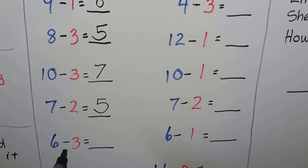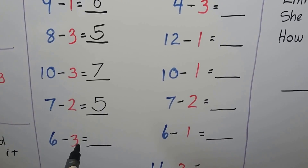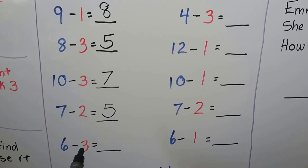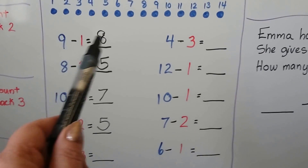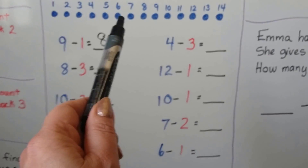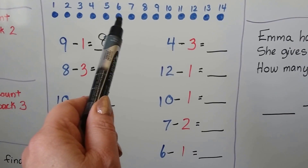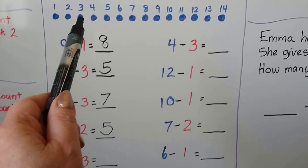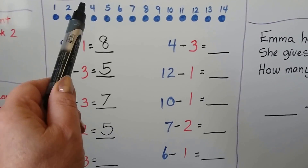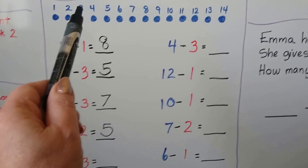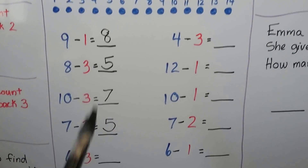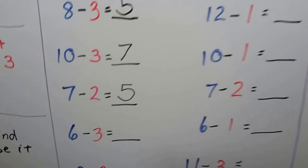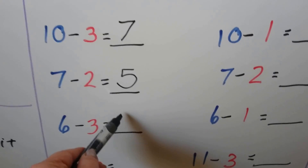6 minus 3. We start at the 6 and count back 3. Here's the 6. Let's count back 3: 1, 2, 3. That brings us to 3. 6 minus 3 is equal to 3.